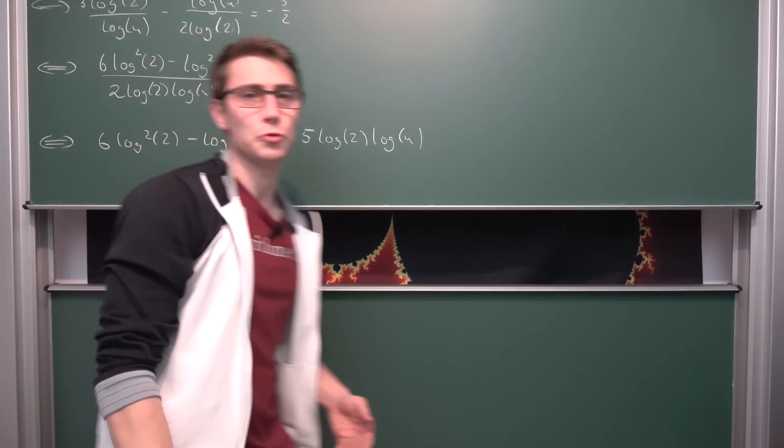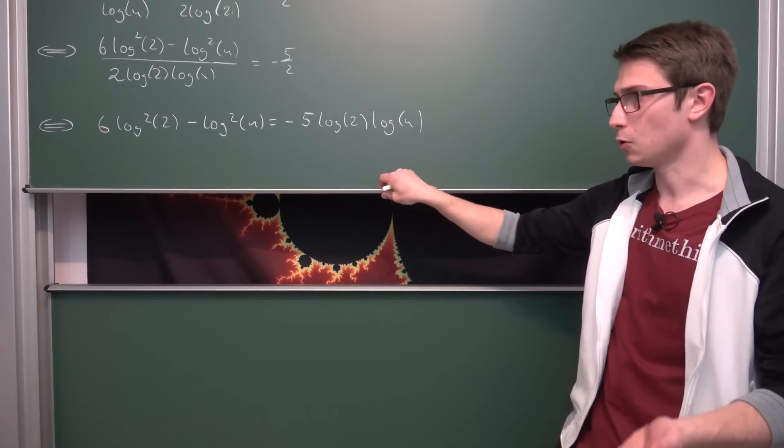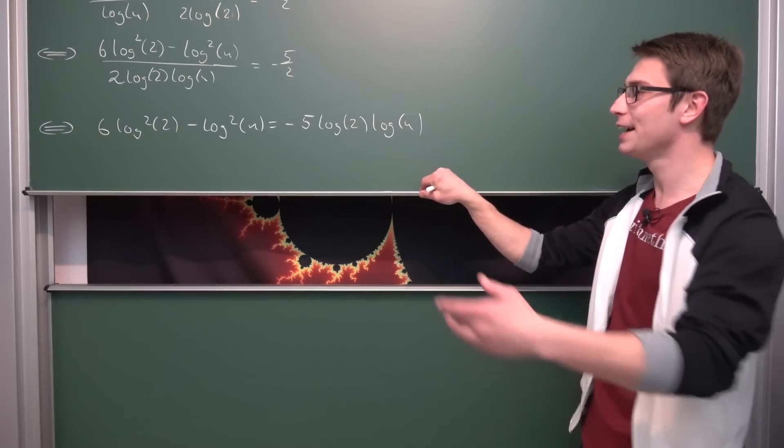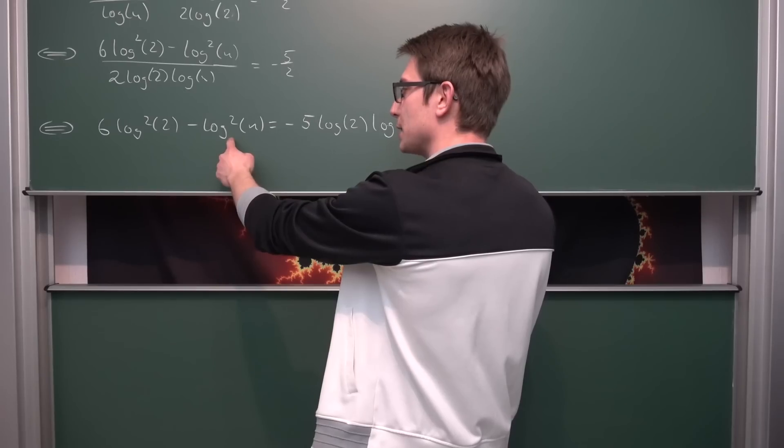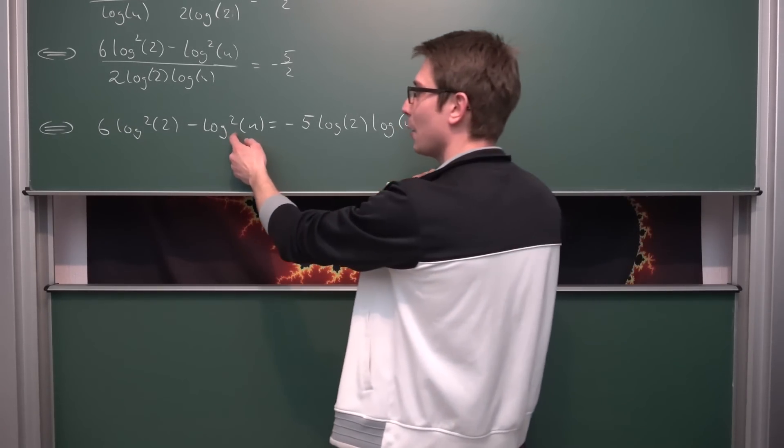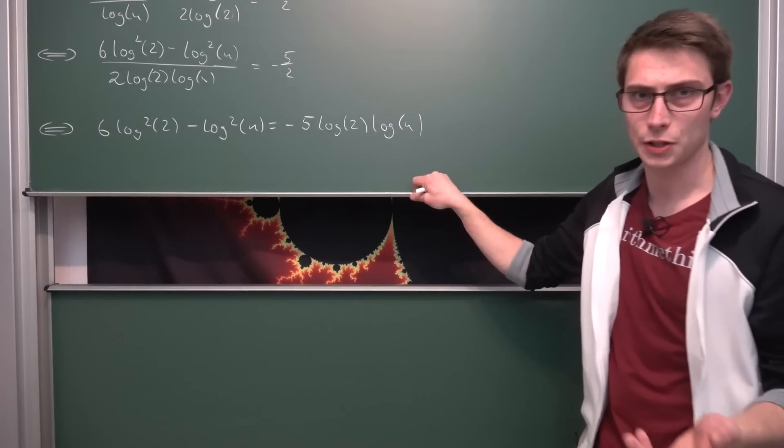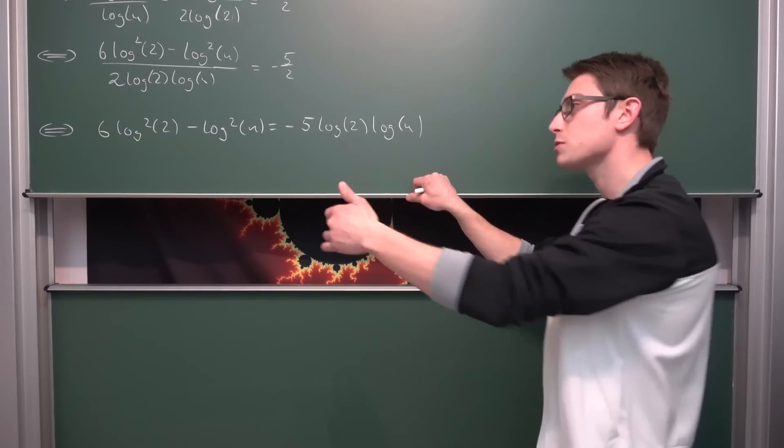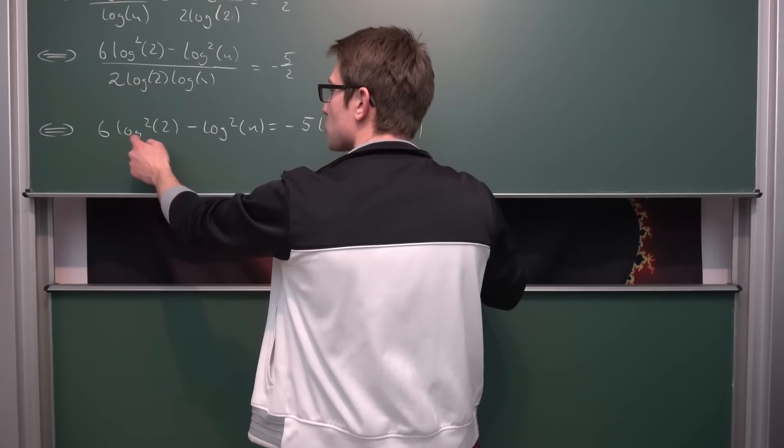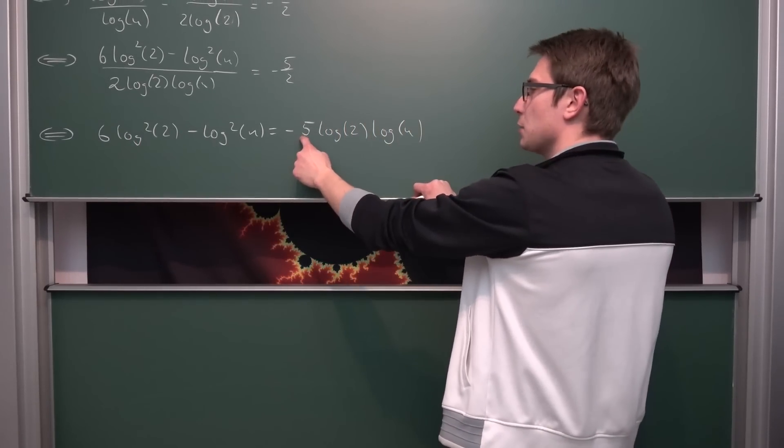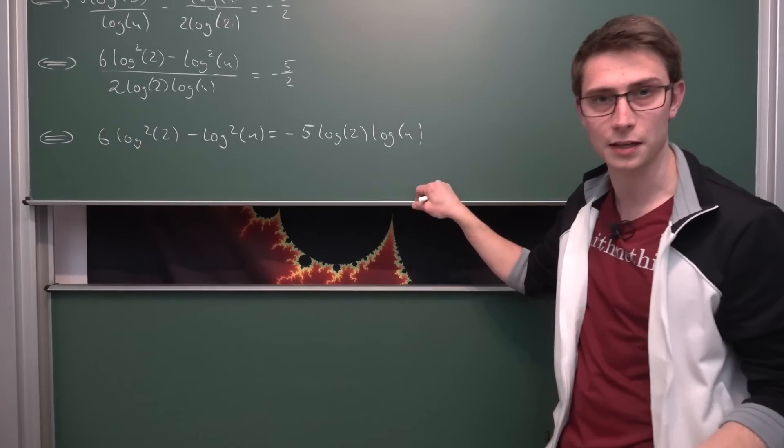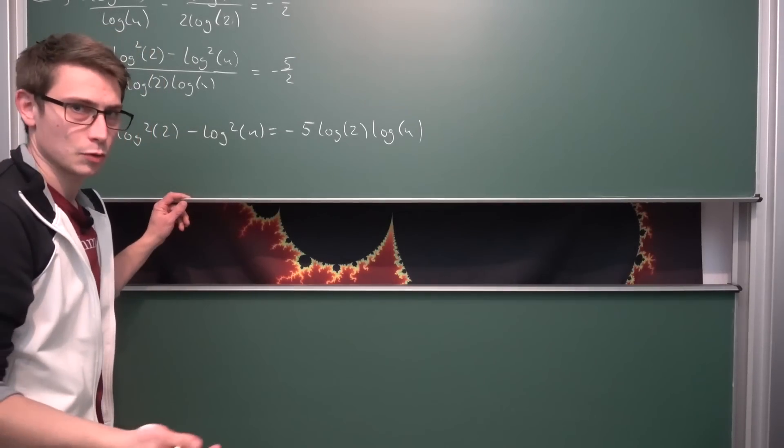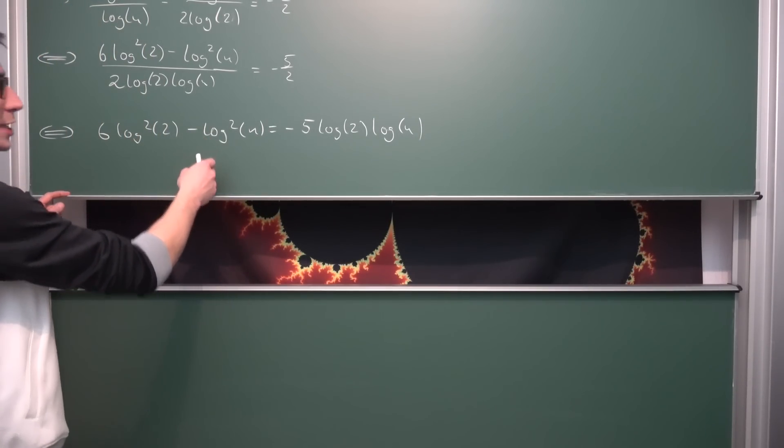And now what we are going to do is we are going to solve a quadratic equation. You're going to notice that this right here is a polynomial of the second degree in our logarithm of n. What you can do is you can say, let log of n be equal to x, then you are going to have the equation 6 times log squared of 2 minus x squared is equal to negative 5 times log of 2 times x. And that's a quadratic equation that everyone can easily solve. We can find the zeros of that using the quadratic formula.